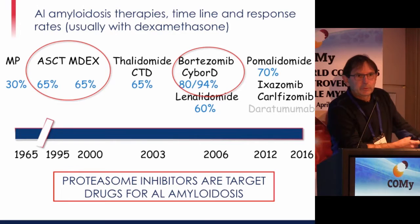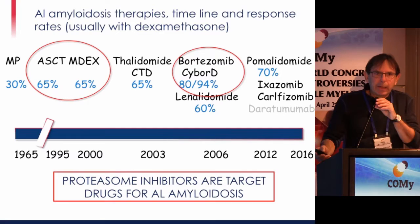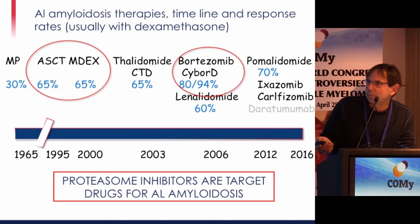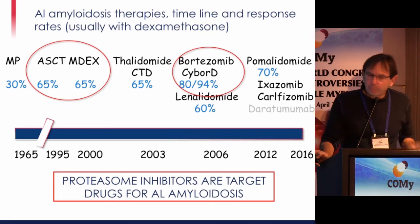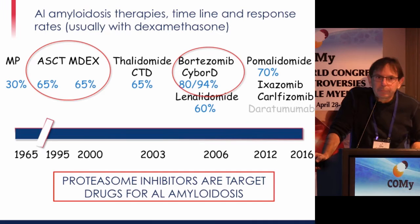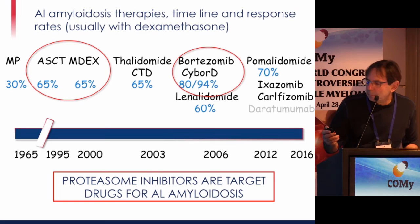Here is a timeline of treatments used since the 1960s in AL amyloidosis, following progress made in myeloma. In the 1960s with MP, the response rate was 30 percent and median survival was one and a half years. Things began to change with autologous stem cell transplantation, which doubled response rates, but rapidly we saw that melphalan and dexamethasone — instead of prednisone — had response rates not far from autologous SCT. The best response rates were with bortezomib-containing regimens. Proteasome inhibitors are clearly targeted drugs for AL amyloidosis.